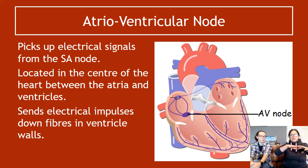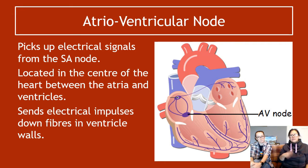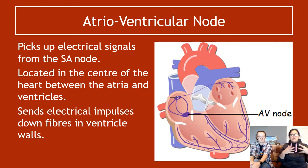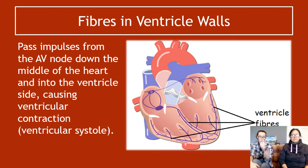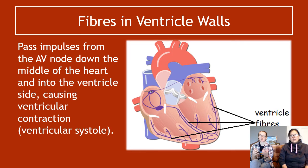The wave of electrical activity passes across the atria causing them to contract, then hits the second bundle of fibers — the atrioventricular node, or AV node. The AV node is located in the center of the heart, between the atria and the ventricles. Its job is to collect the electrical signal from the atria and pass it down the fibers in the ventricle walls, causing the ventricles to contract — ventricular systole.